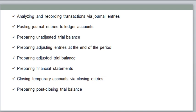Journal entry means recording all transactions — there is no segregation, no classification. After that, posting journal entries to ledger accounts — that is called ledger posting. After that, preparing an unadjusted trial balance. To know the arithmetical accuracy, whether all the debits and credits are matching or not, whether anything is missing — for that we need to prepare an unadjusted trial balance.